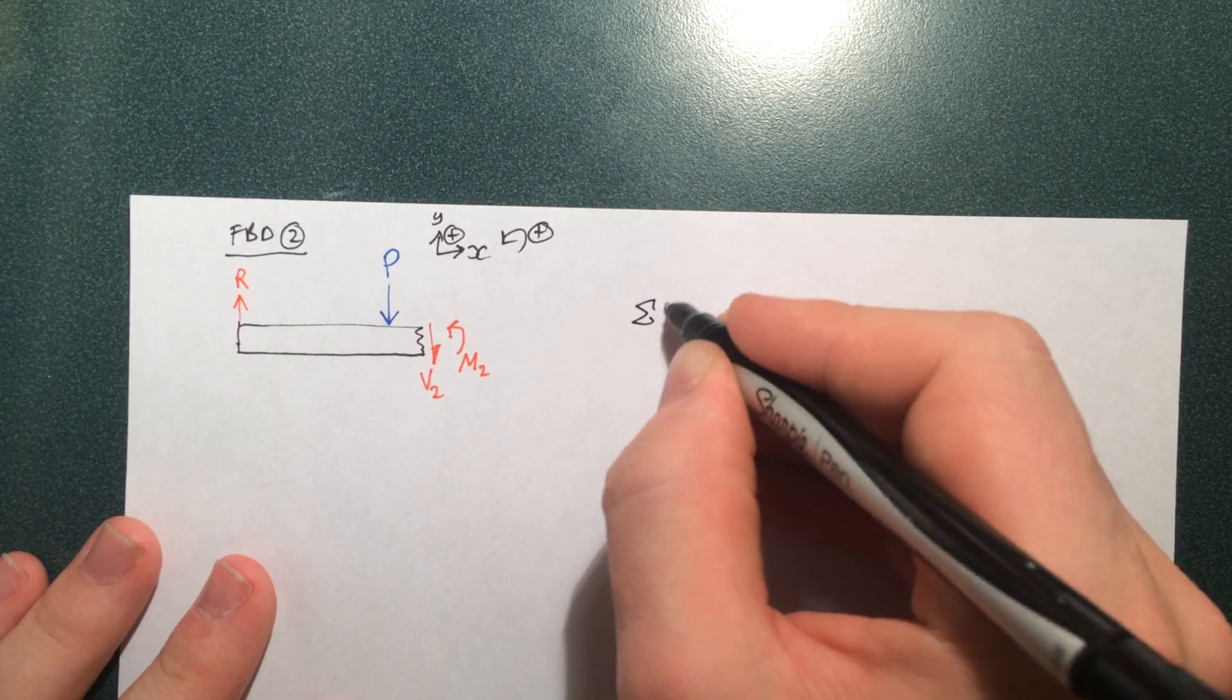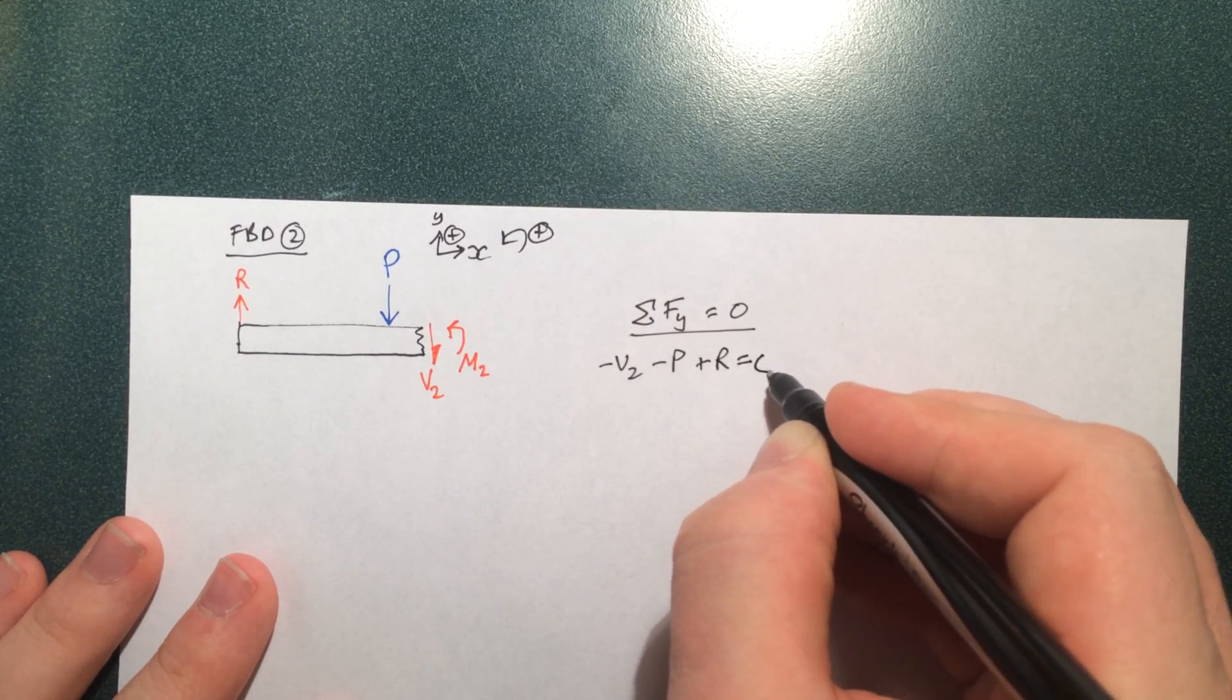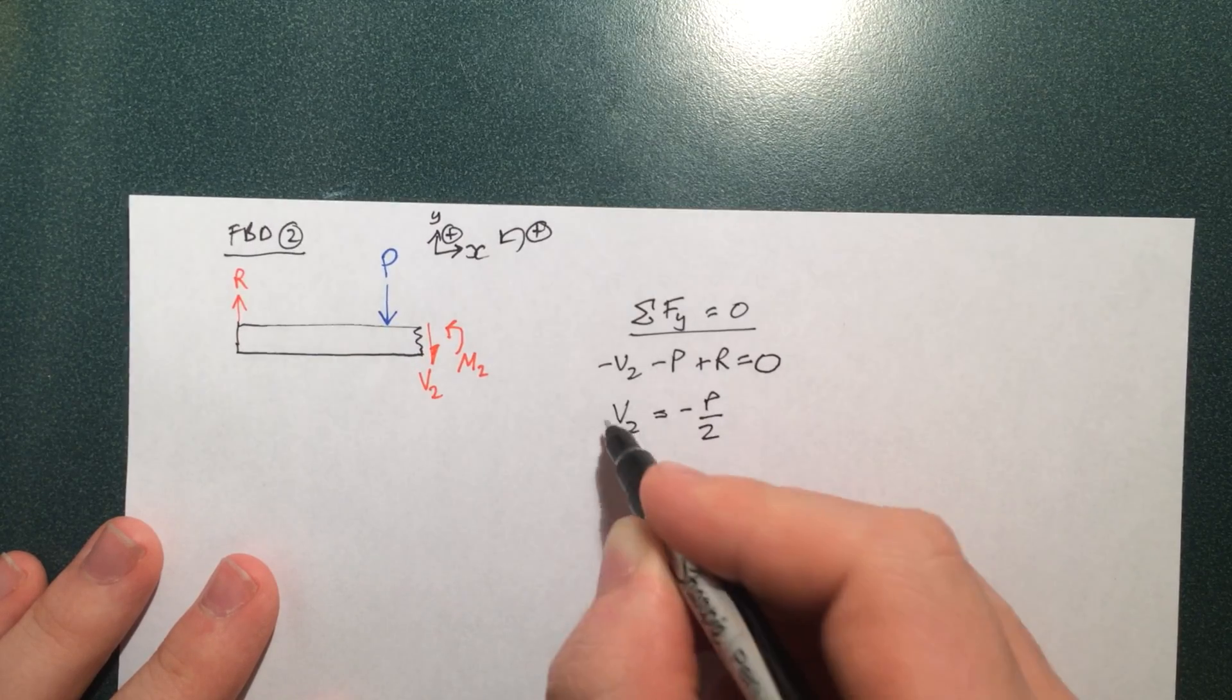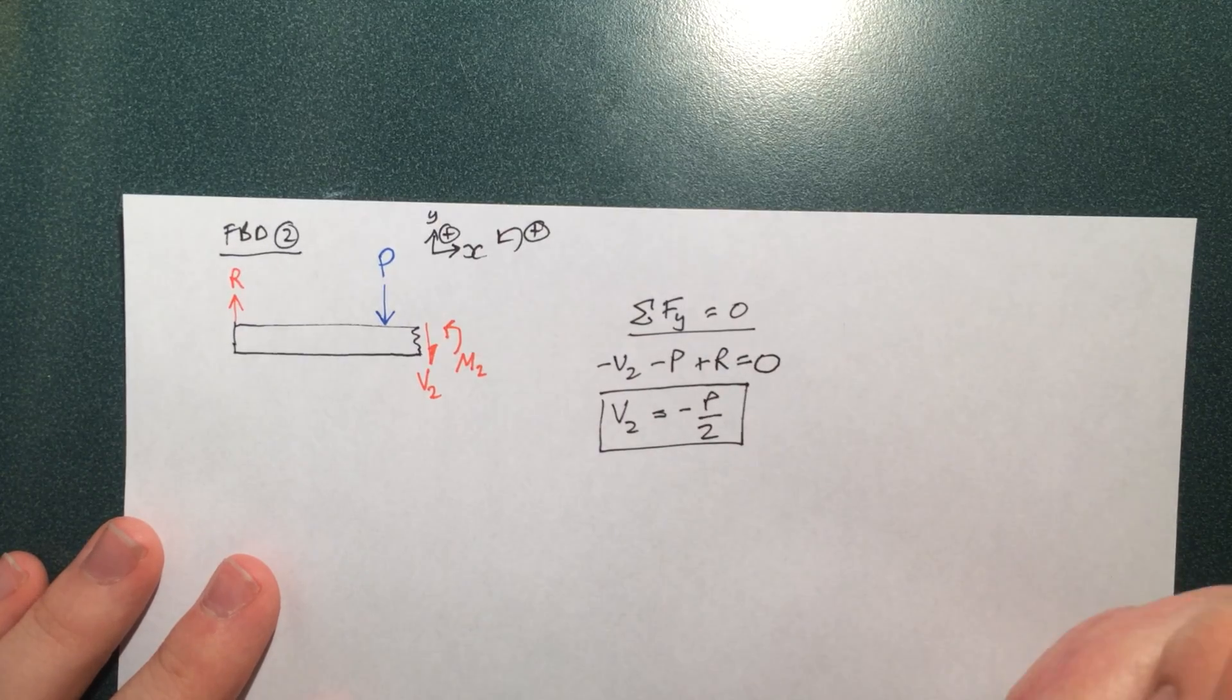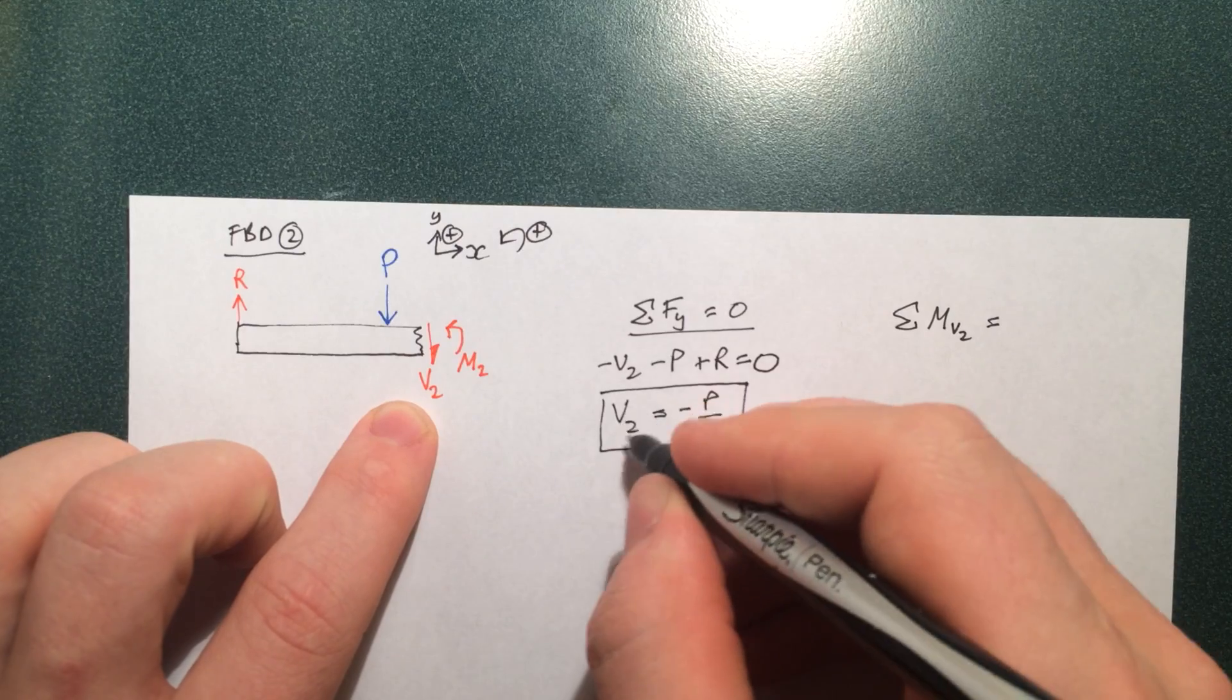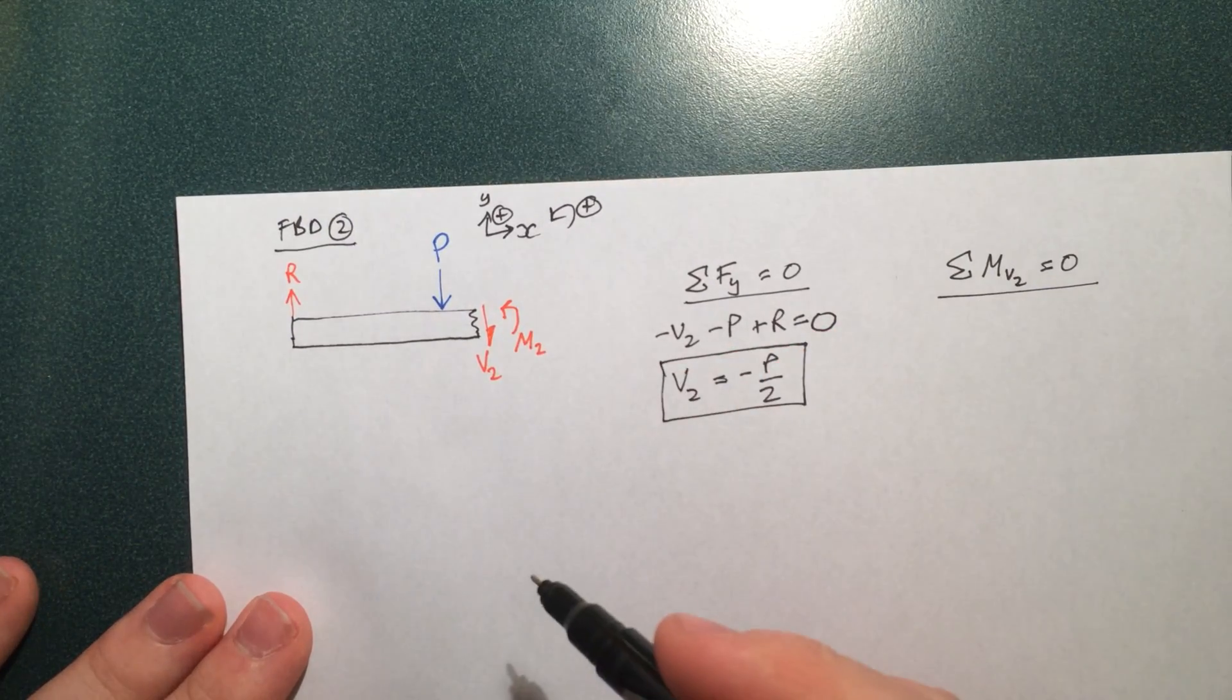So we're going to do the same thing as we did before. Sum of the forces and sum of the moments. Let's do forces first. And I got that just by rearranging this and then putting R as P by 2. And now for the sum of the moments. And before I do this, of course we're going to take it around V2 to eliminate the need to use V2, thereby reducing the chance of making a mistake.